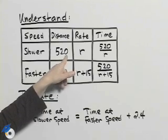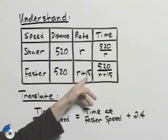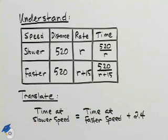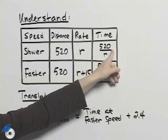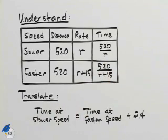So we know that the distance in each case is 520 miles. The rate at the slower speed we don't know, so we'll call it R. And the faster rate is 15 miles per hour faster. The time is distance divided by rate, so we have 520 divided by R and 520 divided by R plus 15.